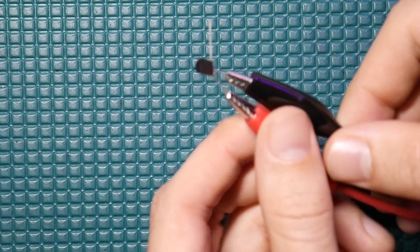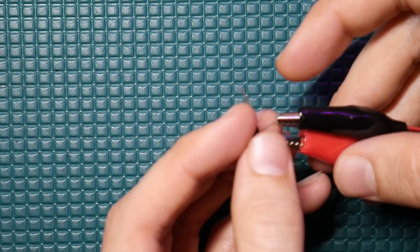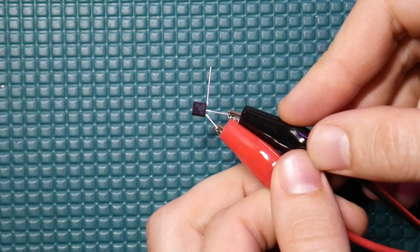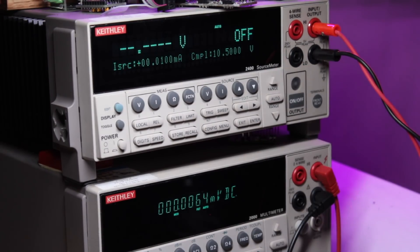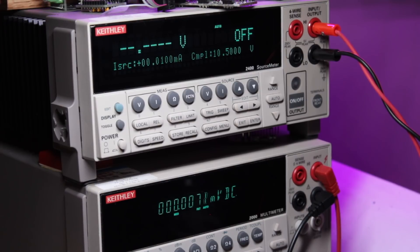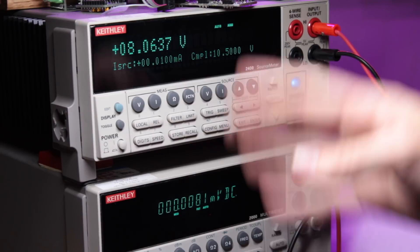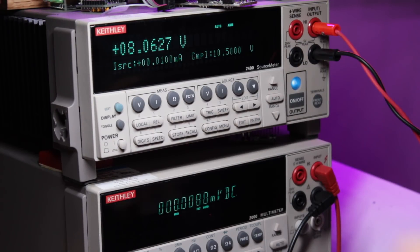Okay, so there you have it. We are going to source a current through the emitter to base using the source measure unit. We're just going to put 10 microamps through here to start and we'll measure the voltage. So let's go ahead and hit that. And there you have it, just about 8 volts.